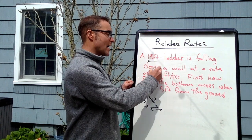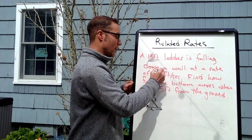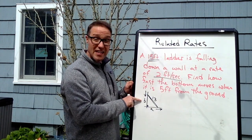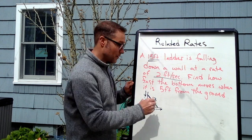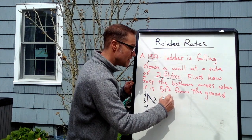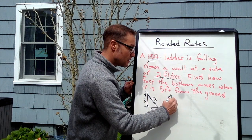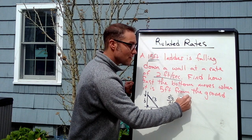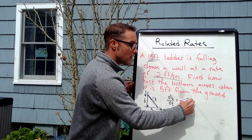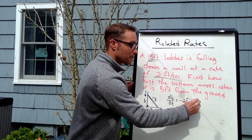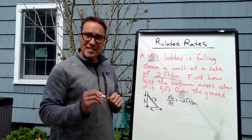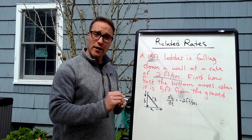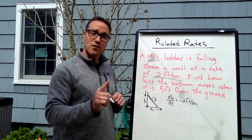The ladder is falling down the wall at a rate of 2 feet per second — so B is changing. dB/dt is negative 2 feet per second. A rate that's decreasing is a negative rate — don't forget that, it's important.